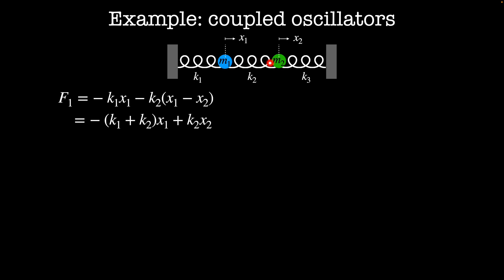So spring k2 exerts an equal and opposite force on m2 as it does on m1. So that's just going to be minus k2 times x2 minus x1. And the force from spring 3 on mass m2 is just minus k3 times x2. When I group terms, I end up with k2 times x1 minus k2 plus k3 times x2. From Newton's laws, this sum of forces acting on mass 1 equals m1 x1 double dot. And the net forces acting on mass 2 are equal to m2 x2 double dot.